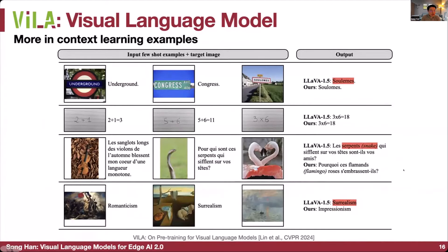There are several in-context learning examples: given some context and few-shot examples, the model can tell the prediction for a target image. For example, performing OCR, doing math, writing a poem, and talking about style.